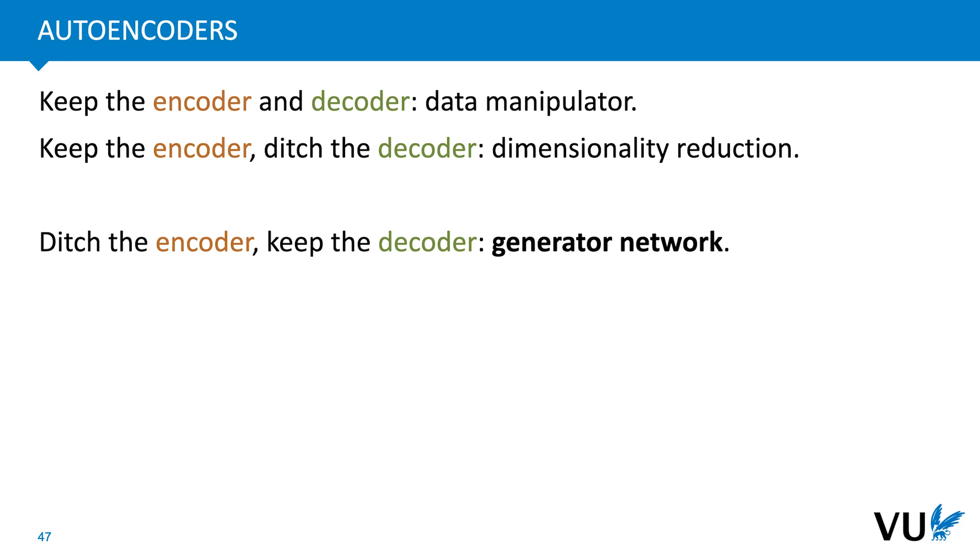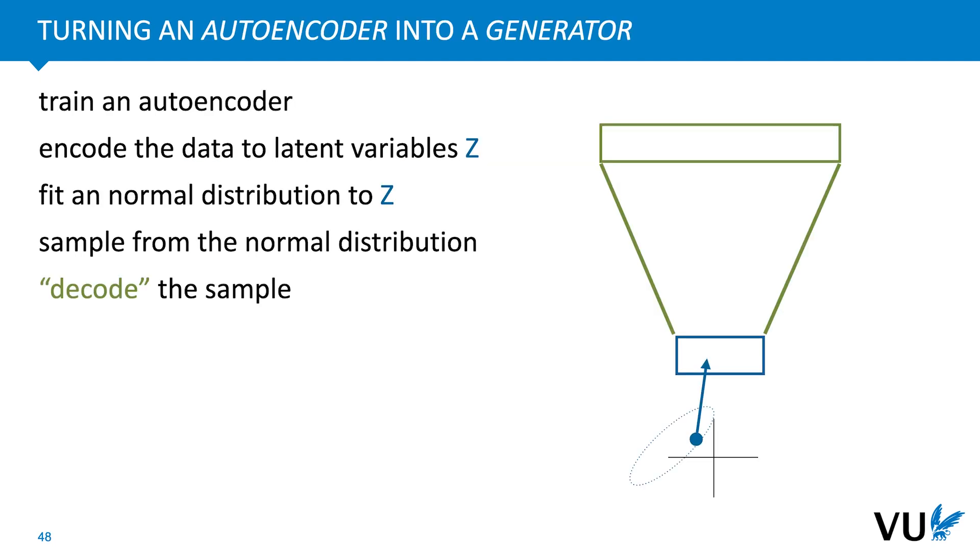One final thing we can do is we can throw away the encoder and keep only the decoder. In that case, the result is a generator network. A network that can generate fictional examples of the sort of thing we have in our dataset. In our case, pictures of people who don't exist. Here's how that works. The encoder will map the data to a point cloud in our latent space. We don't know what this point cloud will look like, but we'll make an educated guess that a multivariate normal distribution will make a reasonable fit. We then fit such a distribution to our data in the latent space. And if it does fit well, then the regions of our latent space that get high probability density are also the regions that are likely to decode to realistic-looking instances of our data.